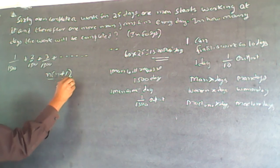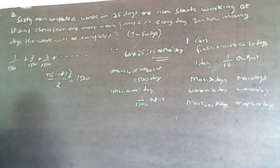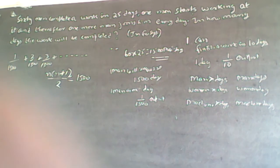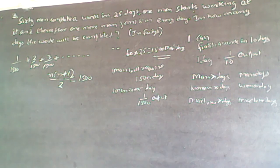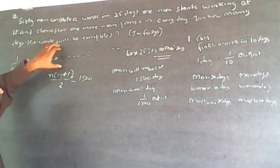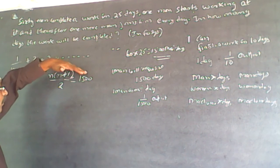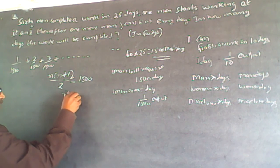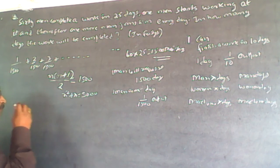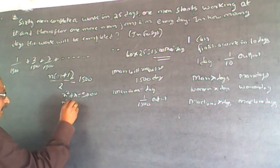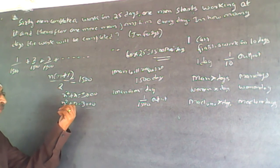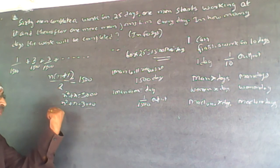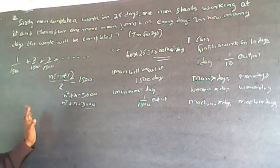So n(n+1)/2 = 1500, which means n² + n = 3000. You will have to find what n is. This 3000 has to split into two consecutive numbers n and n+1, which is not straightforward to solve directly.